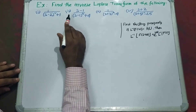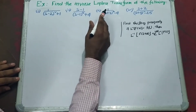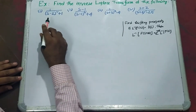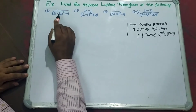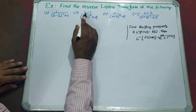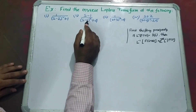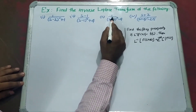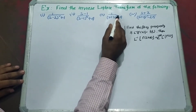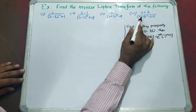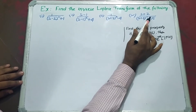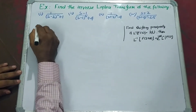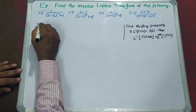Let us consider this example. Find the inverse Laplace transform of the following. Number 1: 1 by (s minus 2) whole square plus 1. Number 2: (s minus 1) by (s minus 1) whole square plus 4. Number 3: 1 by (s plus 3) whole square minus 4. Number 4: (s plus 2) by (s plus 2) whole square minus 25. First we consider number 1.